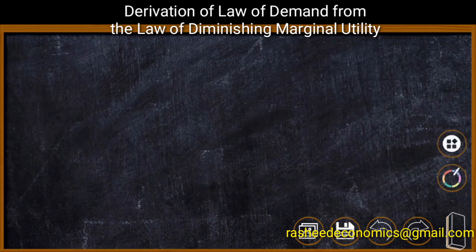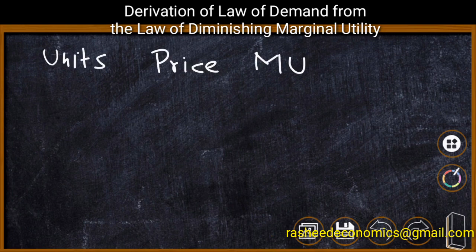Through this video, we are going to link the law of demand with the law of diminishing marginal utility. Consider the following utility schedule with price. We have three variables: units consumed of a commodity, price of the commodity, and marginal utility derived from the commodity.